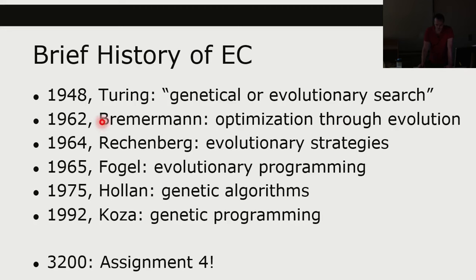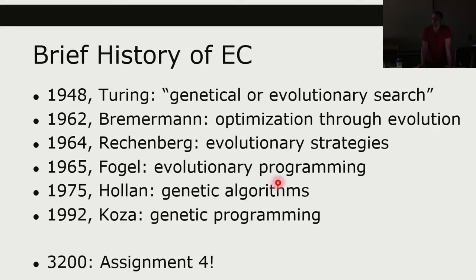In 1962, Bremmerman talked about optimization through evolution. Evolutionary strategies came in 1964, evolutionary programming in 1965. Genetic algorithms — the algorithm we'll actually be implementing in this course — were invented in 1975, so these things are nearly 50 years old at this point. Genetic programming came out in the 90s, and of course assignment four is in 2023.